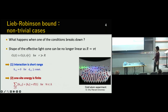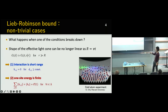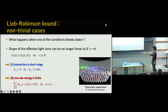The problem arises when one of the conditions breaks down. Unfortunately, these two conditions are not necessarily satisfied in practical setups, such as cold atom systems. Our question is: what happens? How does the shape of the effective light cone of the local approximation change? In the standard Lieb-Robinson bound, the shape of the effective light cone is linear — the approximation becomes very good if the distance is proportional to the time. But this changes if the conditions break down.